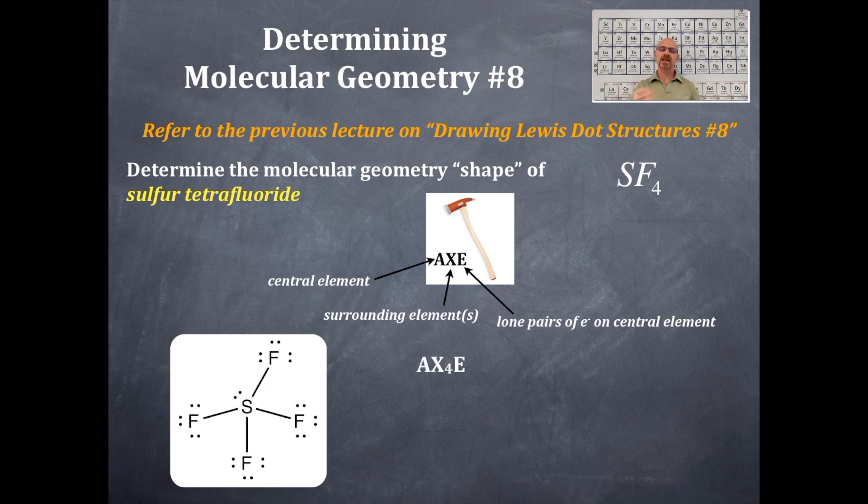You should see that AX₄, so the four plus the one E, is five domains. So it's generically a trigonal bipyramidal structure as far as domains.